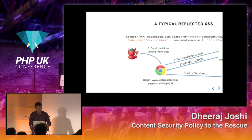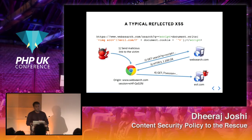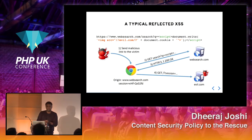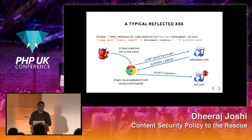A typical reflected XSS looks like this: someone sends you a malicious link, you click on it, and it tries to get all your cookies — which may include session cookies — and sends them to the attacker. That cookie would let attackers take control over your session.